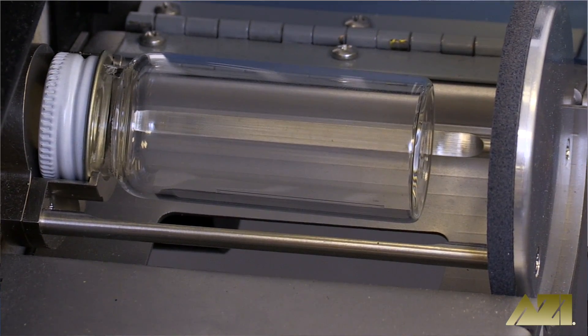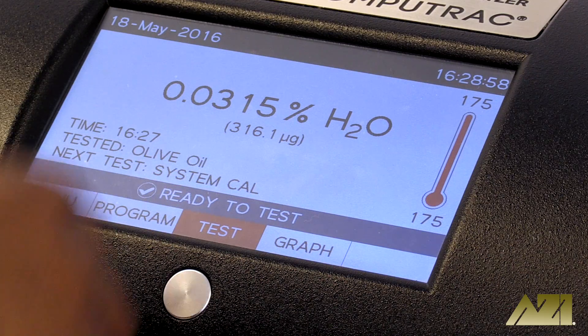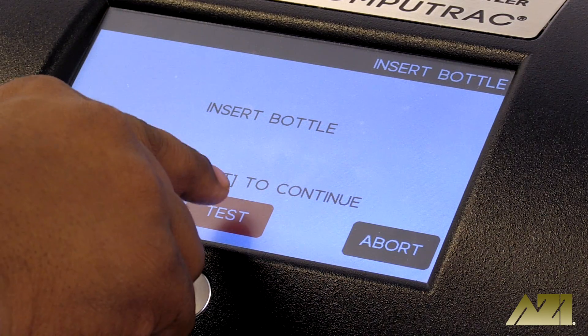Place the bottle on the transport with the cap side toward the instrument. Hit the test button in the middle bottom of the touch screen and follow the on-screen instructions.